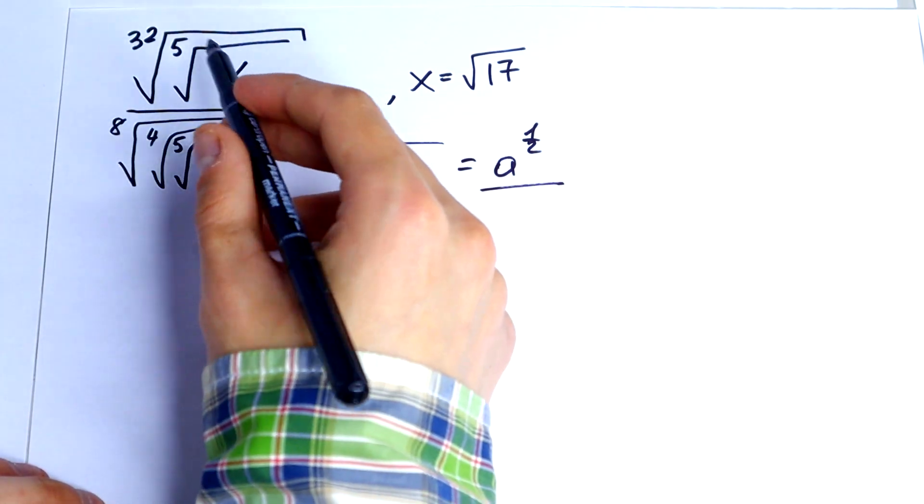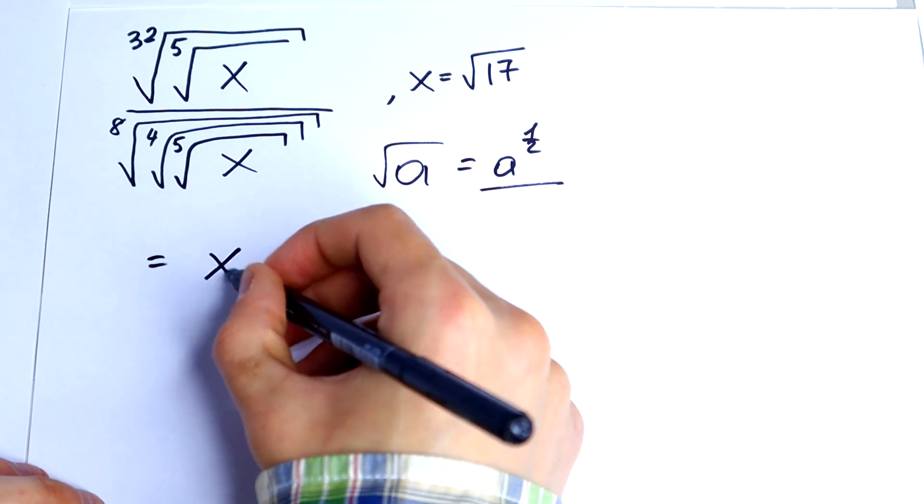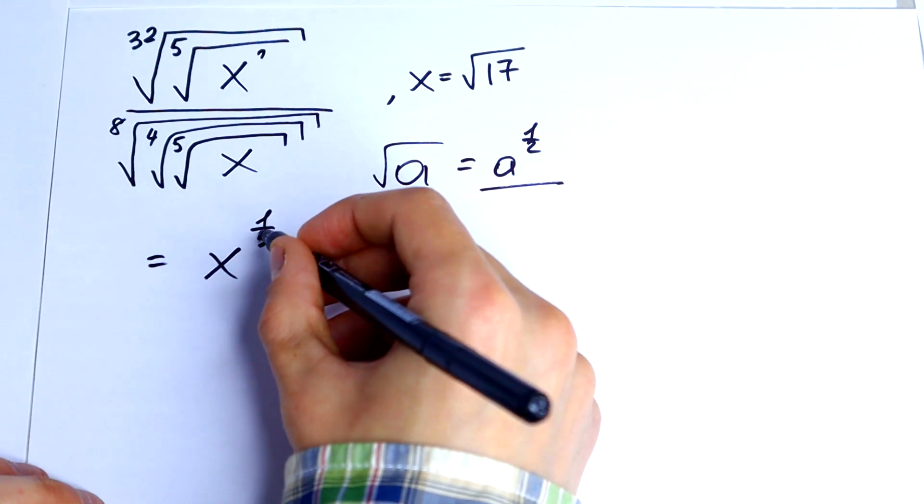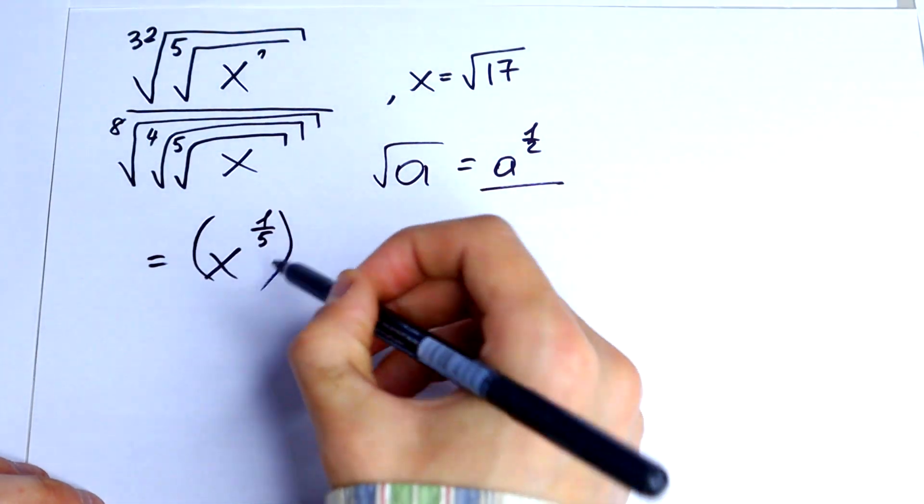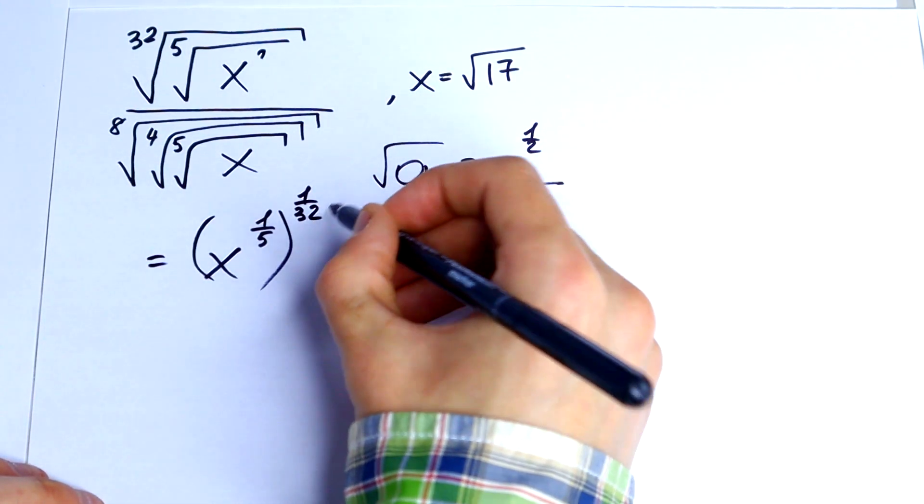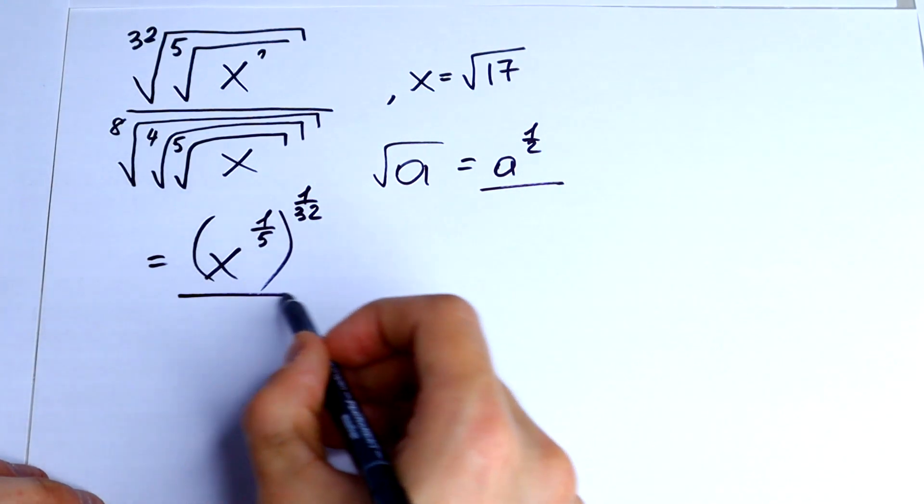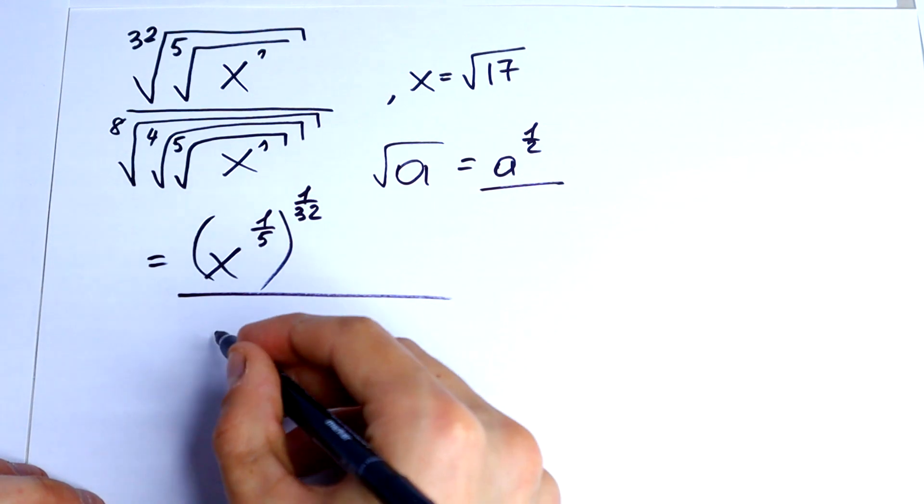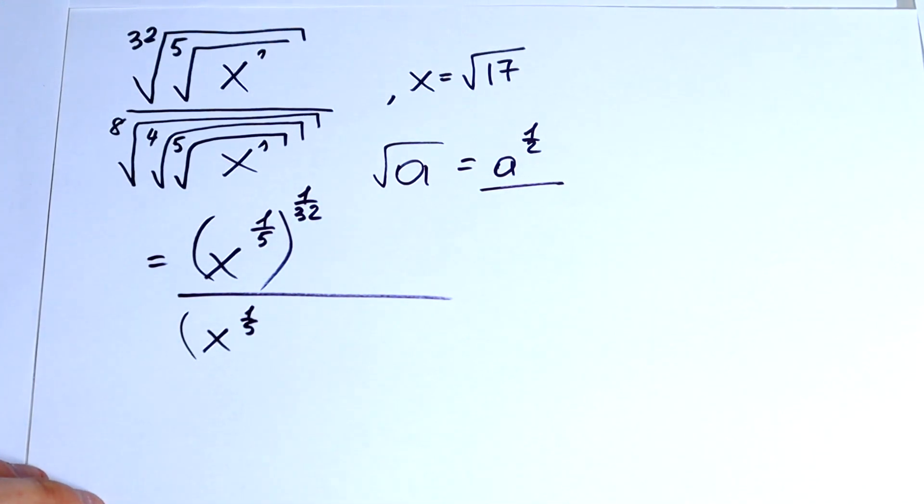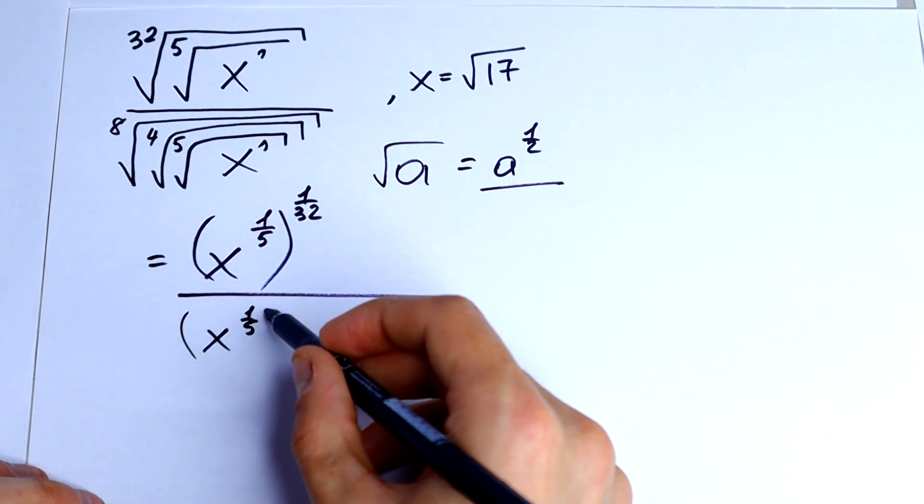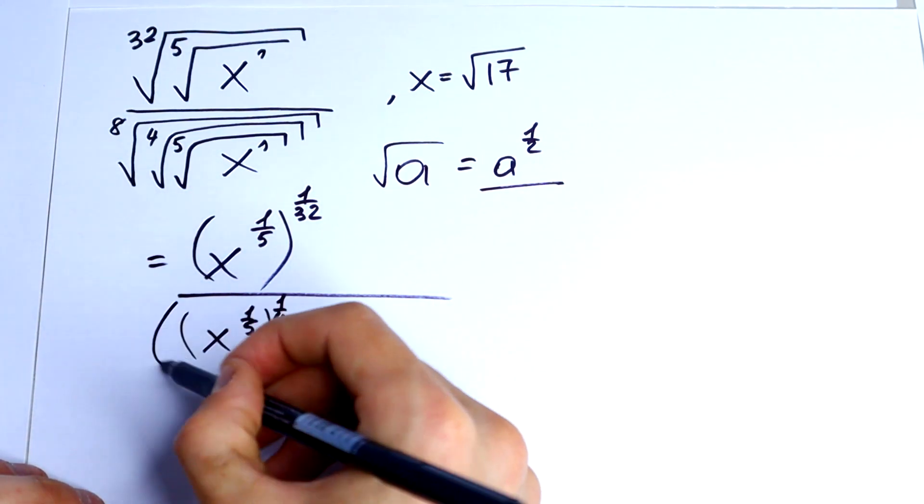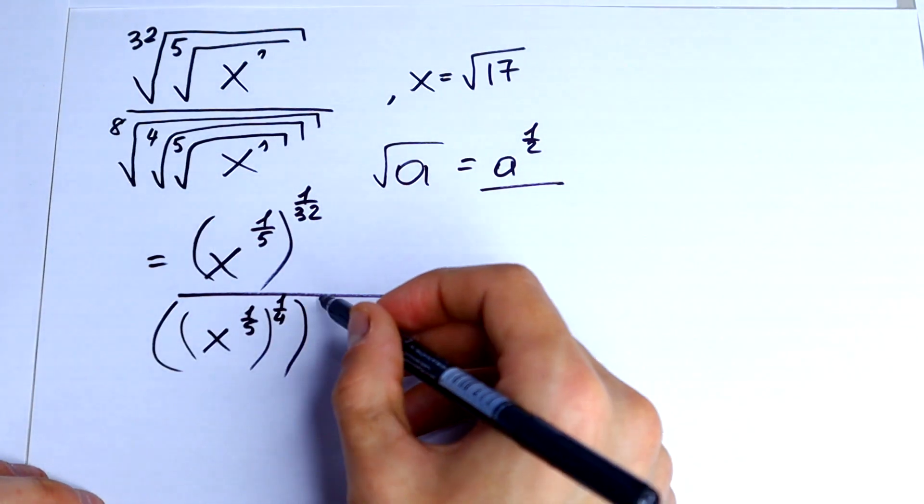We would have x, here is one, 1x to the 1 over 5 and all raised to the 1 over 32 power. And on the bottom x to the power 1 over 5, to the power 1 over 4 and to the power 1 over 8.